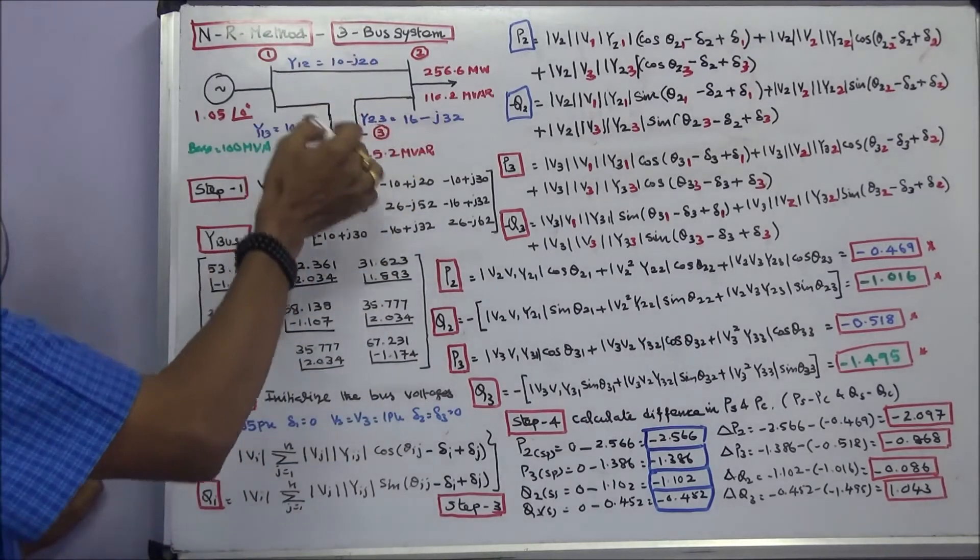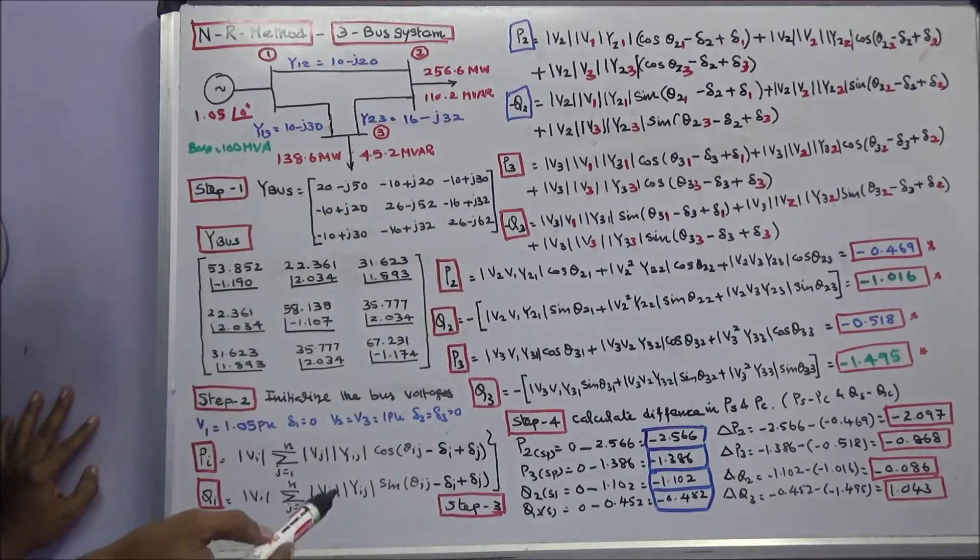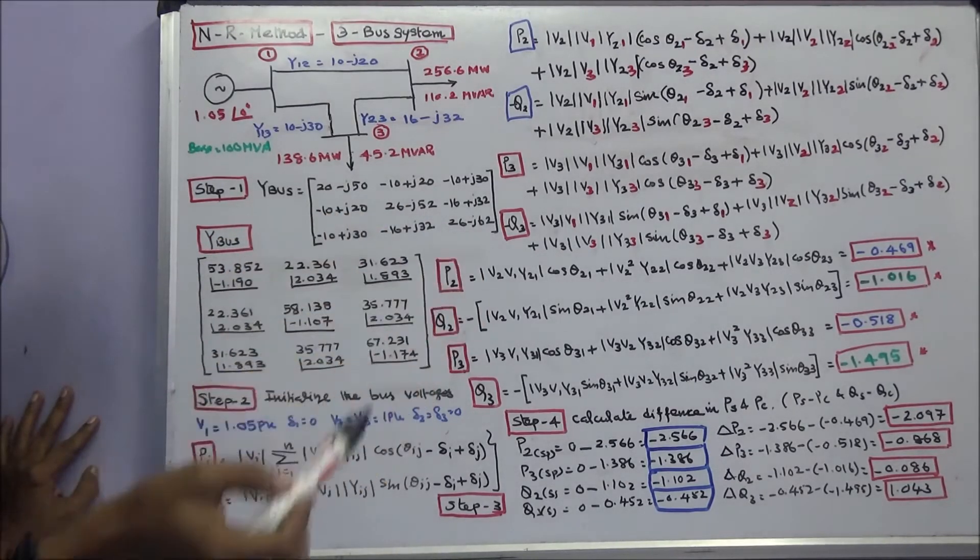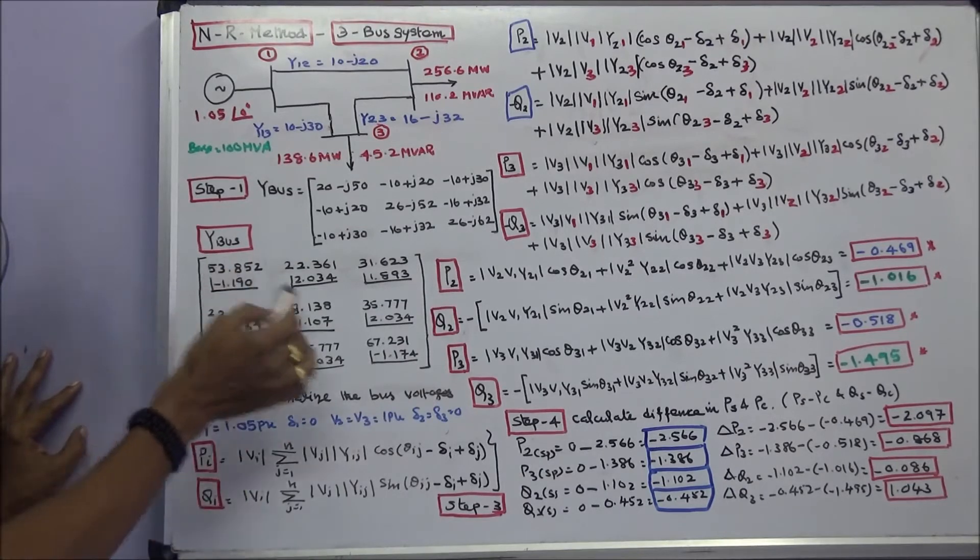Line series admittances are given. First step we have to form a Y-bus matrix. Set the calculator into the radian mode. This is the magnitude, this is in radians. This is the Y-bus of the system.